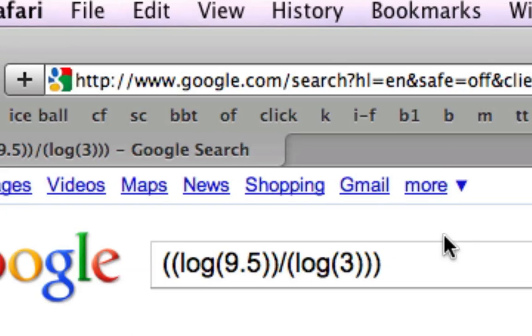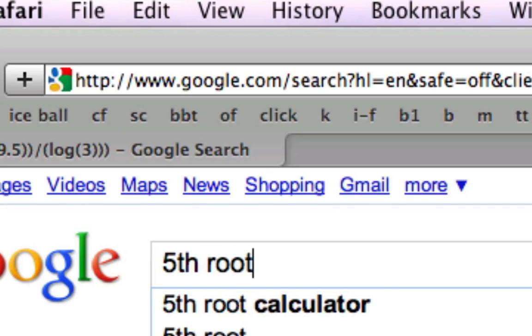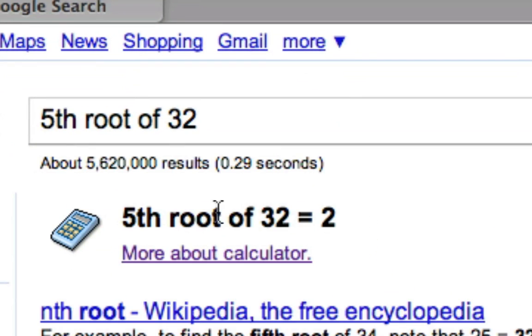and I'm just gonna show you that real quick. Like, let's just say, fifth root of 32 equals two,